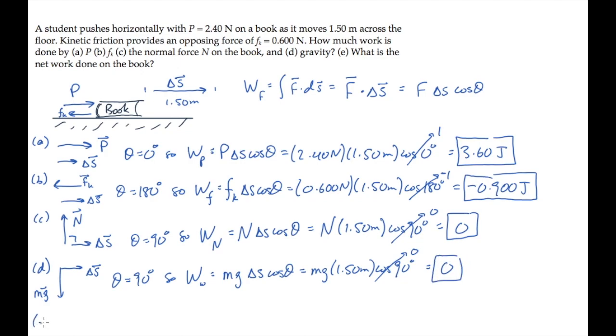Finally, part E asks us for the net work done on the book. That's the sum of all the works done on the book: the work done by the pushing force, by friction, by the normal force, and by the weight. Adding those together, with the last two being 0, gives us a net work of 2.70 joules.